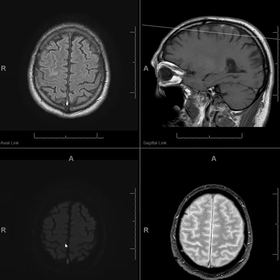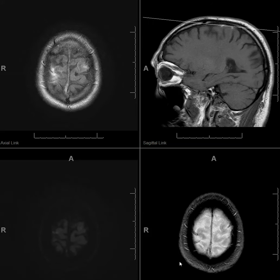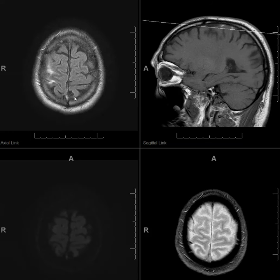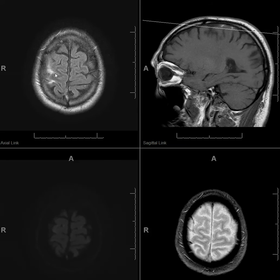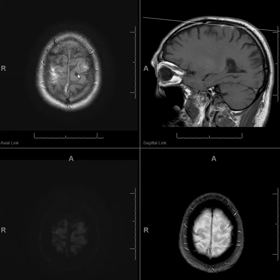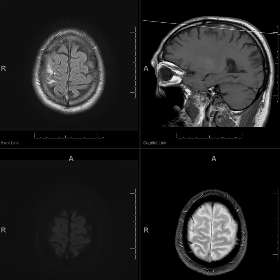I guess venous thrombosis tends to cause hemorrhagic stroke. I assume because the vein doesn't drain well, the fluid around the vein is not purely water like CSF, so they don't suppress normally.